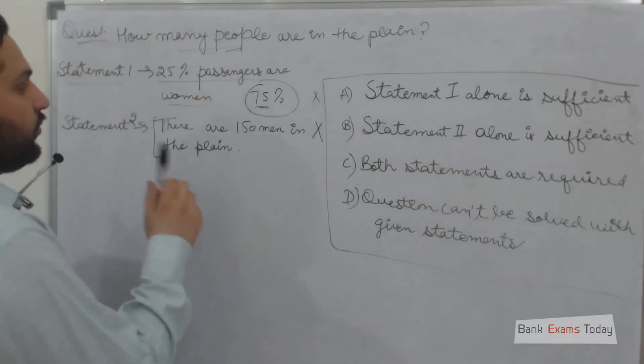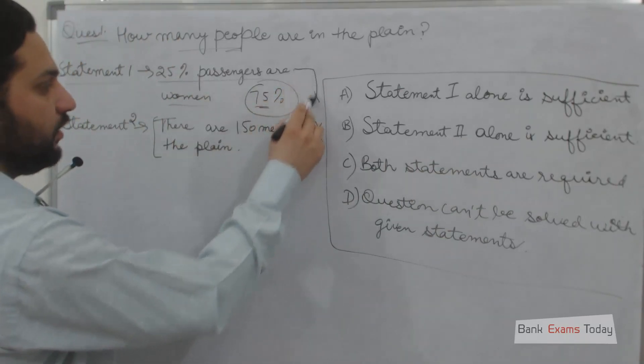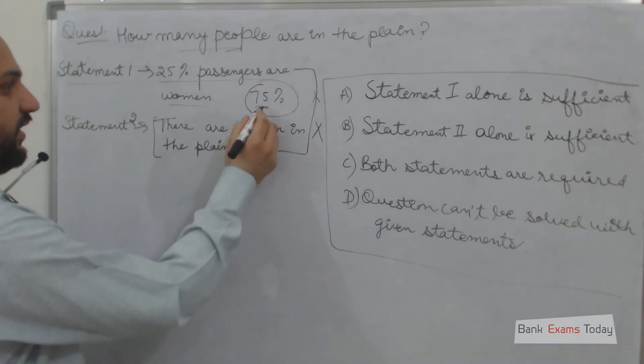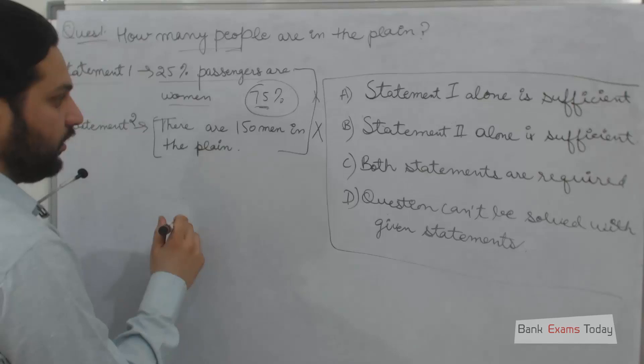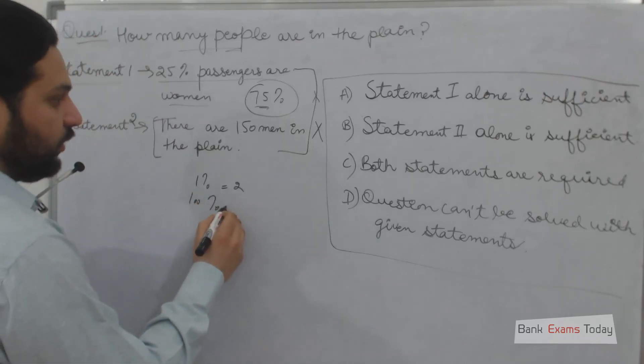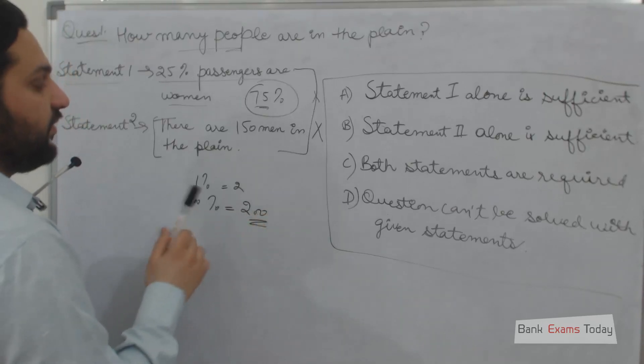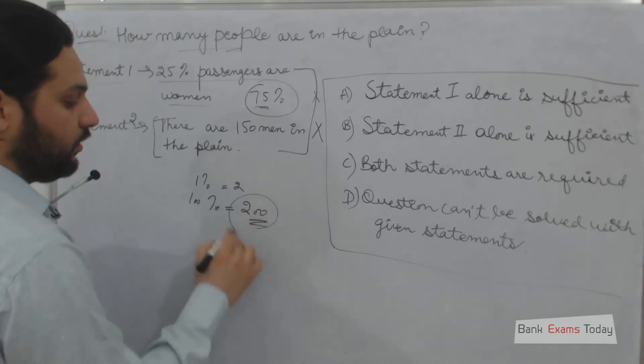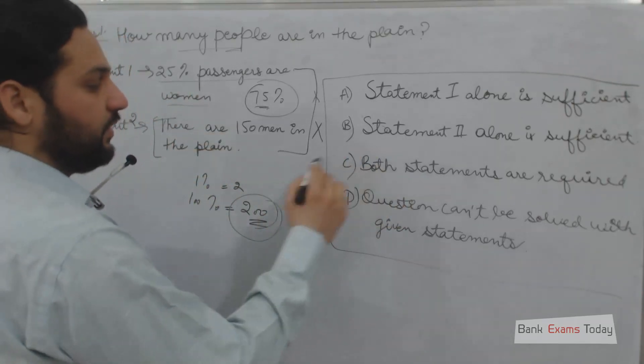If we combine both statements: 75% of the passengers are male, and there are 150 men. That means 1% equals 2, so 100% equals 200. The number of passengers is 200. If we use both statements, we can answer the question. Both statements are required - the answer is C.